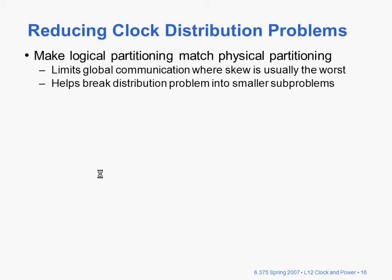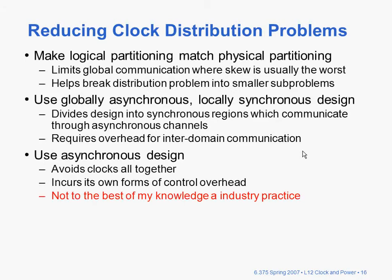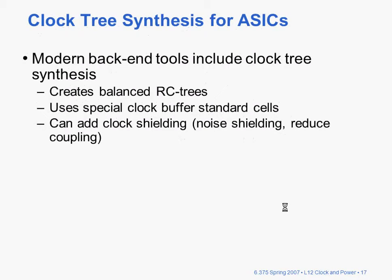To reduce clock distribution problems, make logical partitions match physical partitions. That limits global communication, where skew is usually the worst, and helps break the problem into smaller problems. On a large chip, you'd have locally synchronous regions connected with asynchronous channels. Or the other extreme is to use asynchronous design completely, which avoids clocks, but is much more difficult to engineer and is not an industry practice.